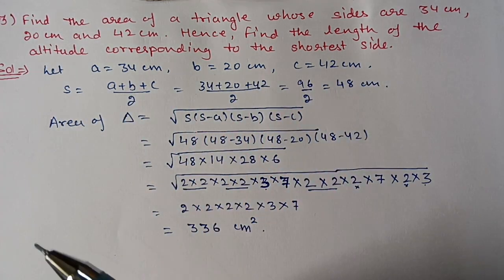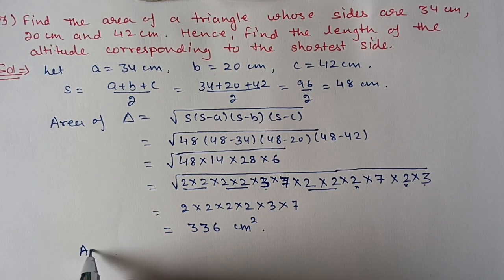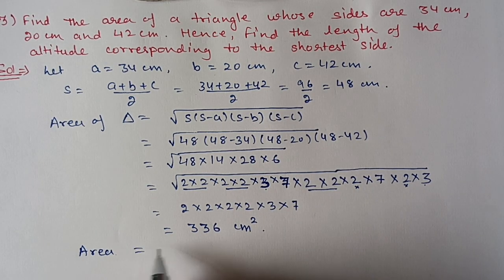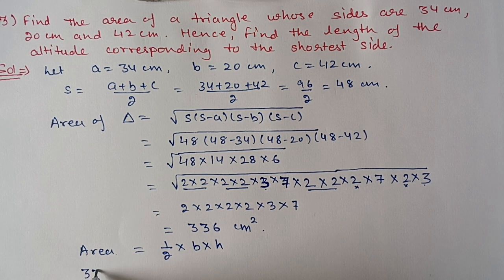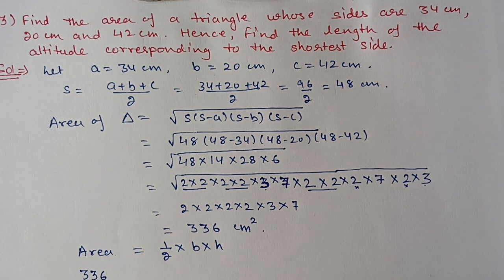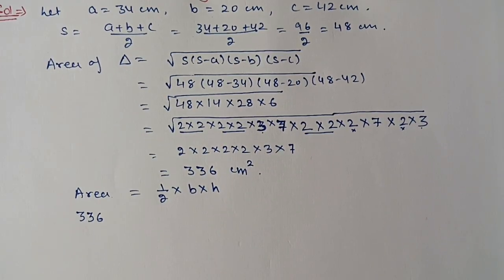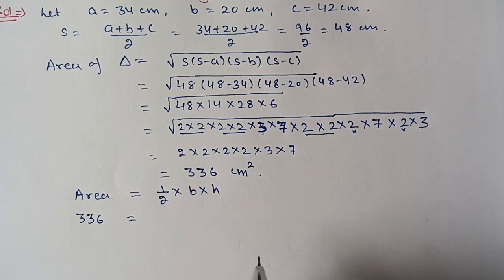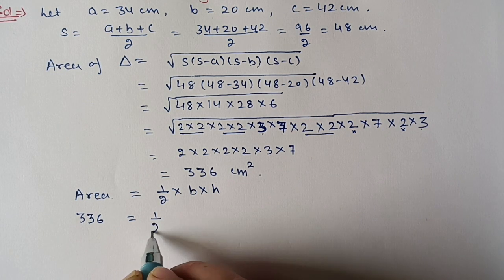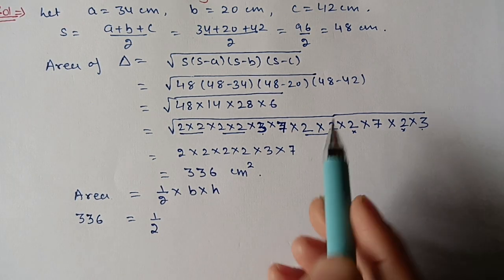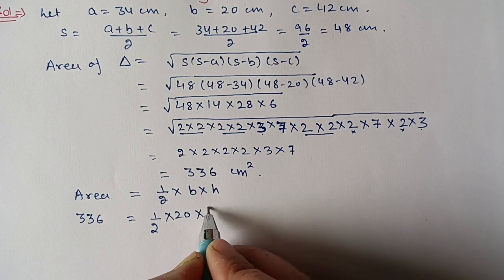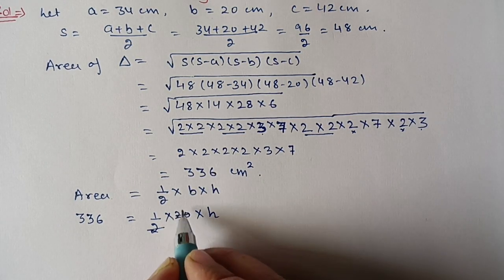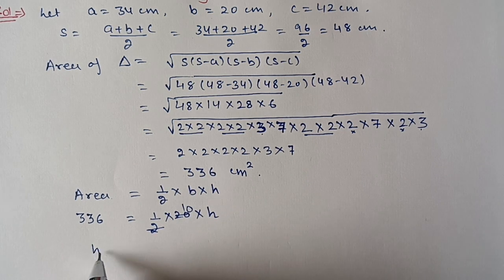We use the area formula: area = (1/2) × base × height. Area is already calculated as 336 cm². The shortest side is 20 cm, so base = 20. Then 336 = (1/2) × 20 × h, which gives h = 336/10 = 33.6 cm.